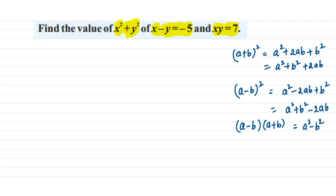Now think about which is the most suitable identity which you can apply over here in order to find this. We have x² + y², we have x - y given to us.